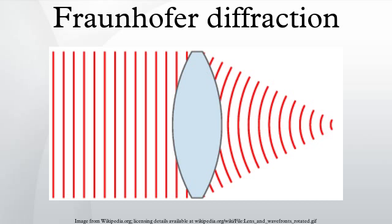When a beam of light is partly blocked by an obstacle, some of the light is scattered around the object, and light and dark bands are often seen at the edge of the shadow. This effect is known as diffraction.